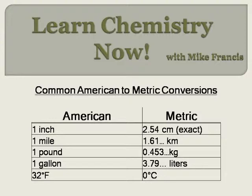For example, one inch in the American system is going to equal exactly two point five four centimeters in the metric system. One mile is going to equal about one point six one kilometers. A pound is going to equal about four point five three kilograms. A gallon is going to be three point seven nine liters approximately. And thirty-two degrees Fahrenheit, the temperature at which water freezes, is going to be equal to zero degrees Celsius.